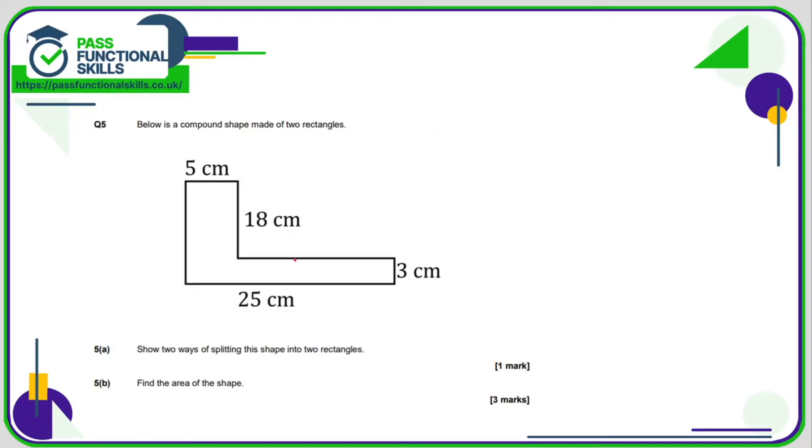Question number five. Show two ways of splitting this shape into two rectangles. Well, you could split it horizontally here, and you can also split it vertically here. So the reason you're splitting it is to separate it into two rectangles. One is 5 times by 18, and 18 fives are 90. So this part here has an area of 90, and this is 3 times 25, which is 75. And now what we need to do is just add these two together to get 165 square centimeters. Of course, you can do those calculations on a calculator. It's absolutely fine.